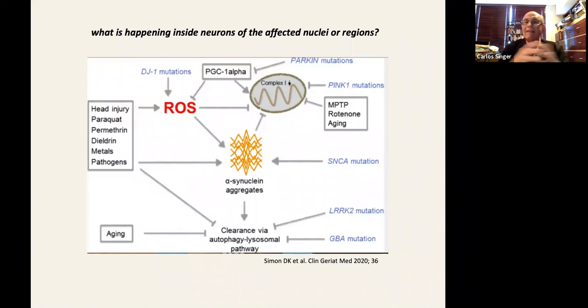So what is happening inside the neurons of the affected nuclei or regions? In the substantia nigra, but also in the dorsal motor nucleus of the vagus, what is happening in there? Well, what happens, you have on the left hand side here, a number of toxins or pathogens that brings to mind the cases of Parkinsonism that is post-encephalitic, metals like we mentioned, manganese. You have rotenone, which is also a pesticide.